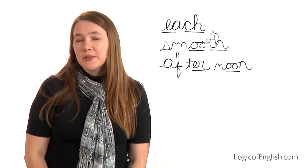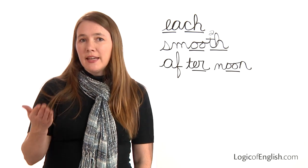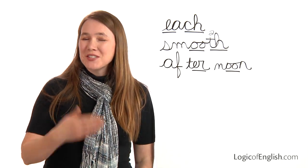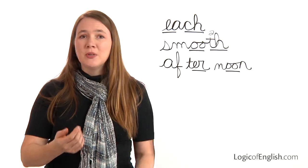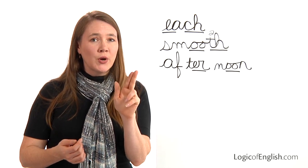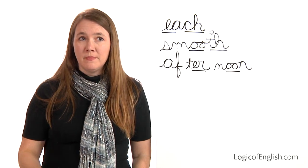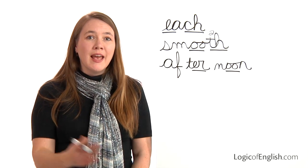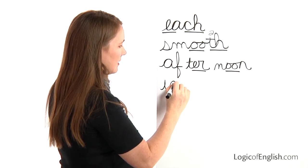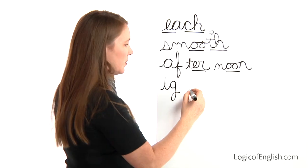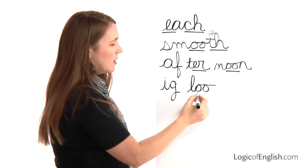The next word is 'igloo.' My brothers built an igloo in the backyard. How many syllables in igloo? Two. The first syllable is 'ig': I, g. The second syllable is 'loo': L, oo. Now help me write it: first syllable 'ig' — I, g. Second syllable 'loo' — L, oo. We'll underline the oo.